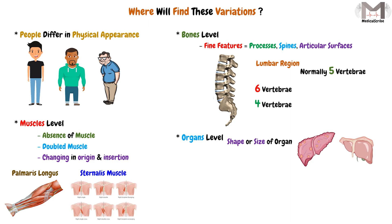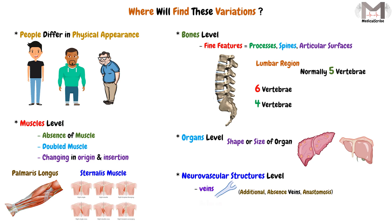Finally, there are variations at the neurovascular structures level, which most commonly occur in the veins. We can find additional veins, absence of some veins, or anastomoses in some people that are not found in others. After veins, arteries show variations next most frequently, and the least variable structures are the nerves.